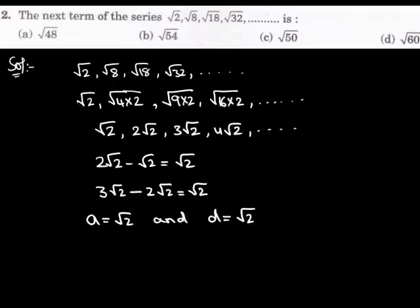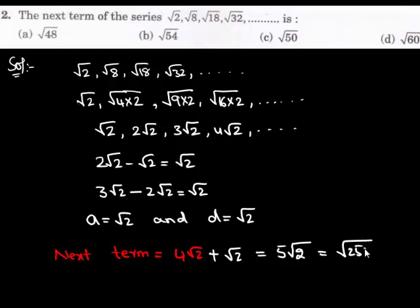To find the next term of the given series, we have to add the common difference to its preceding term. Therefore, the next term is 4 root 2 plus root 2, which equals 5 root 2. Since we don't have options in terms of root 2, we square the 5 inside, which becomes 25 times 2, equal to under root 50.